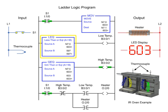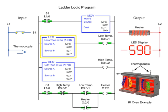Using the less than or equal to and greater than or equal to instructions addressed to the same integer file, the source values of A and B are compared to control the heater. With source A less than source B of the less than or equal to instruction, the low temp and heater outputs are enabled.